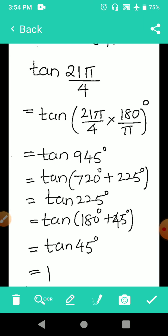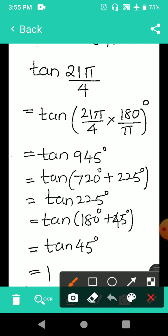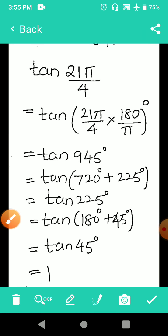Any multiples of 360 are 0, right? So 720 is 0, so tan 225 degrees. I am writing 225 as 180 plus 45, and now because 180 plus 45 is in third quadrant, remember ASTC rule, third quadrant tan is positive. So I am getting positive tan 45 and that is equal to 1.